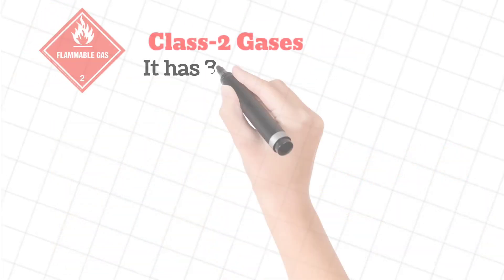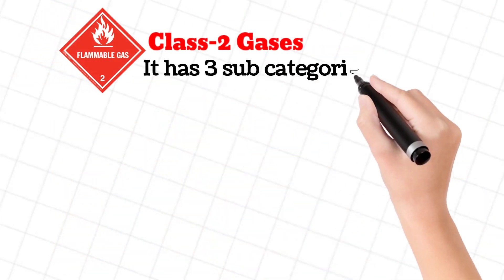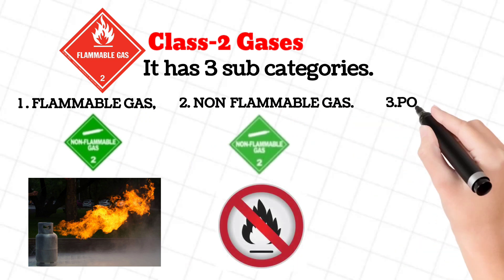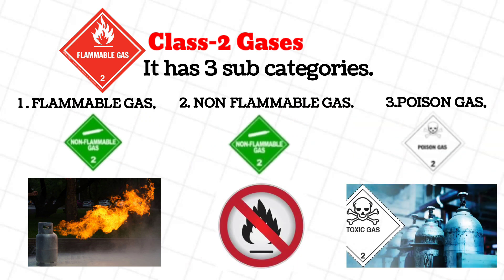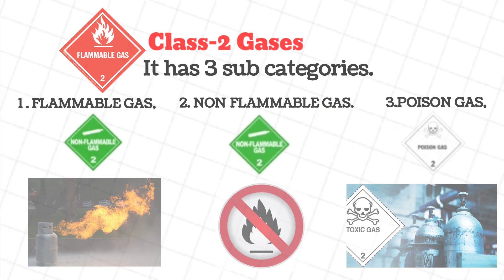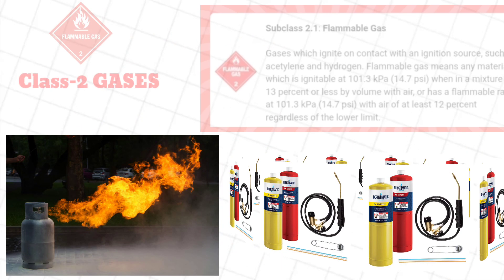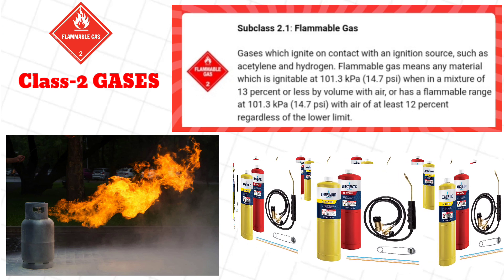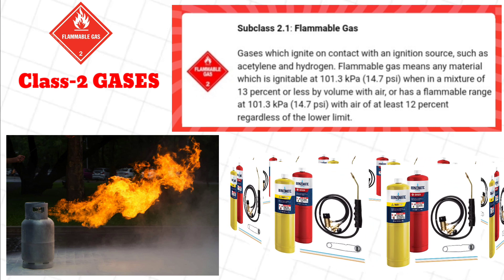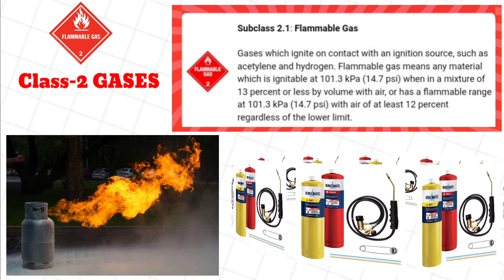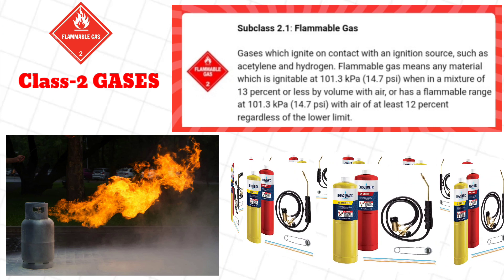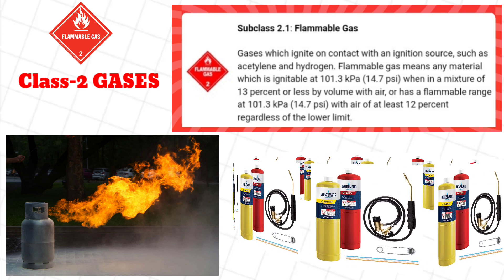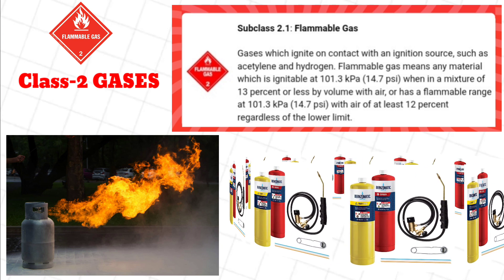Class 2: Gases. It has three sub-categories: Flammable gas, Non-flammable gas, and Poison gas. Subclass 2.1, Flammable gas — gases which ignite on contact with an ignition source, such as acetylene and hydrogen.